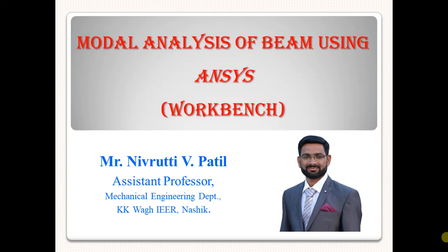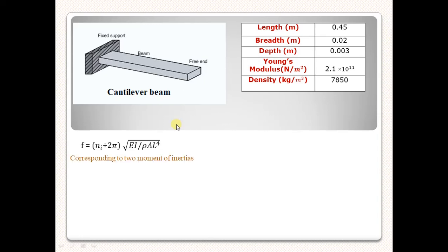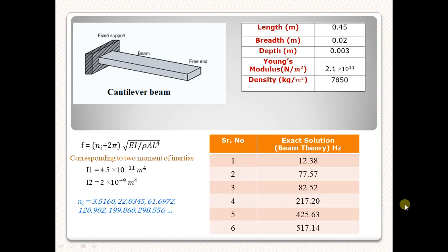In this video tutorial, we are going to perform the modal analysis of a cantilever beam using ANSYS Workbench. Let's consider the cantilever beam which is fixed at one end and one end is free, and its dimensions are given in meters. When we perform the analytical solutions using the beam theory, the natural frequencies will be calculated using this formula. Here ni is a constant term, and as the cross-section of this beam is rectangular, we will get two moments of inertia i1 and i2. Using these i1 and i2 values and constant values as per beam theory, we can find the different natural frequencies. We will get the first six natural frequencies using beam theory by hand, and we are going to validate these results using ANSYS Workbench.